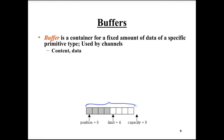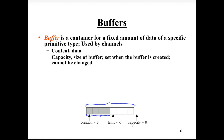A buffer is used to contain data. This example buffer has four elements of data — the gray ones. A buffer has a capacity property that specifies how many elements can be stored in the buffer. It is set when the buffer is created and cannot be changed. This example buffer can contain eight elements.